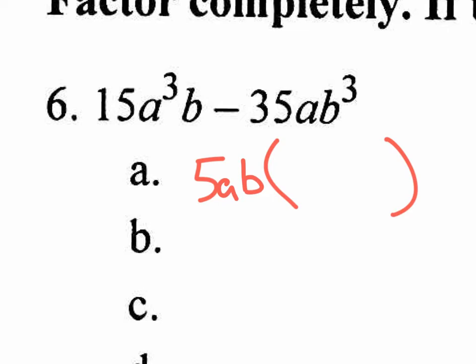So what would be left over on the inside? There's going to be a three A squared, and then minus seven B squared. Now you're supposed to look at the inside and see this binomial. Is there anything to do with that binomial? Could you factor out anything in common? No. It's not a difference of two squares. That's it — you're done. So that's your answer.